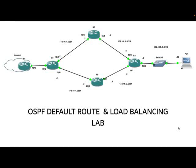In this session of the CCNA series, I will do a lab on OSPF default route and load balancing. As you know, we can also use OSPF to advertise static routes onto your network. Here we have a scenario where I have an enterprise network consisting of R1, R3, R5, R2, and a PC. This network is connected to the internet for end-user internet access. This can be achieved by using OSPF to advertise a default route within an enterprise network for internet connectivity.